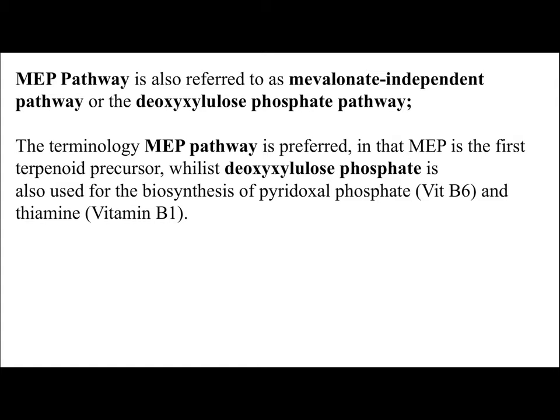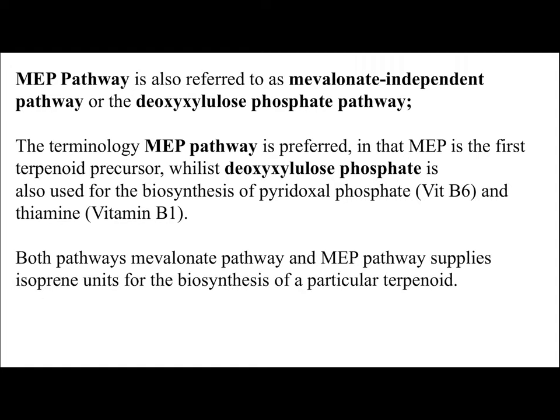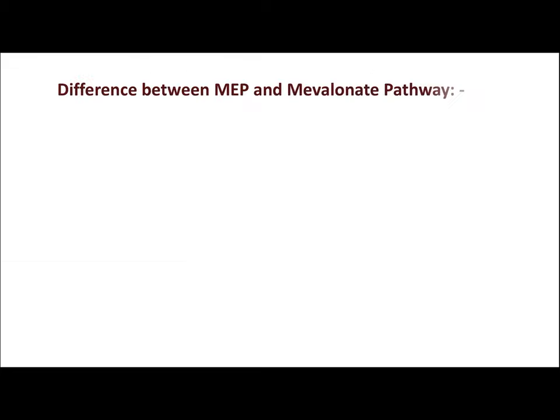Both the mevalonate pathway and the MEP pathway supply isoprene units for biosynthesis of terpenoids — specifically both produce IPP (isopentenyl pyrophosphate) and DMAPP (dimethylallyl pyrophosphate). The difference is that the mevalonate pathway is used by plants, microorganisms, and animals — almost all organisms — especially for the synthesis of cholesterol, while the MEP pathway is used especially by plants and microorganisms for biosynthesis of mono-, di-, and tetraterpenes.